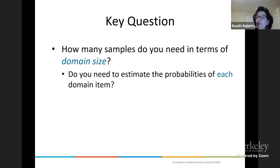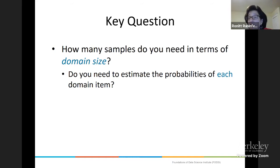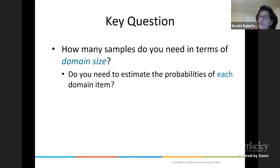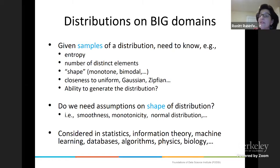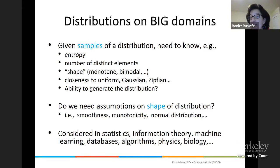Do you need to estimate the probabilities of each domain item? Because if you do, we know that learning a distribution needs domain-size over epsilon-squared many samples. So if you need to estimate each item's probability, you need at least linear in the domain many samples — that's a lot. But is it possible that the sample complexity for your testing problem can be sublinear in the size of the domain? For the problems here, all of these cases, the sample complexity for the testing problem can be sublinear in the domain size. That's the exciting part about this area.